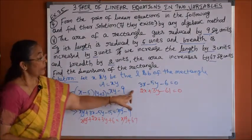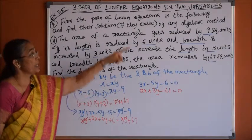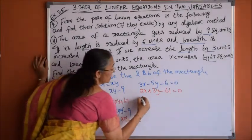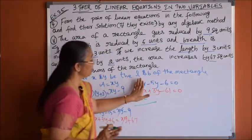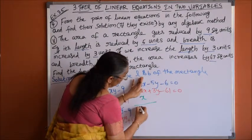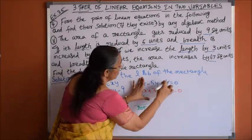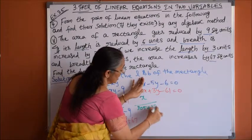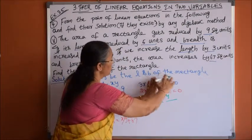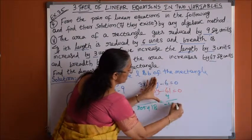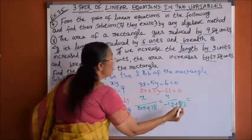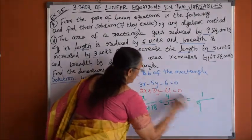We solve this linear system in two variables using the cross multiplication method. For x: the numerator is (minus 5)(minus 61) minus (3)(minus 6), giving 305 plus 18 equals 323. For y: starting from a2, we get (2)(minus 6) minus (3)(minus 61), which is minus 12 plus 183, giving 171. The denominator is (3)(3) minus (2)(minus 5), giving 9 plus 10 equals 19.